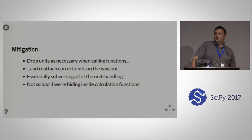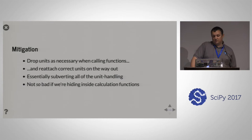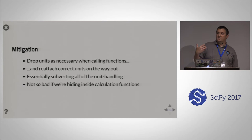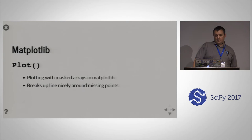Our general mitigation approach when working with NumPy in a flexible manner is: just try it, drop units as necessary when they cause problems, then reattach them on the way out of calculation functions — essentially subverting all of the unit handling. It's not so bad for our library functions where we can hide this from downstream users, but for users who want to call calculations with unit quantities and test things out, these are the kinds of challenges they've got to deal with.